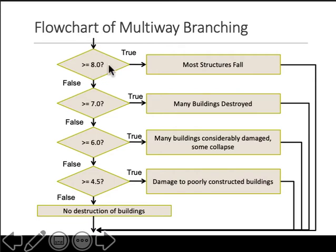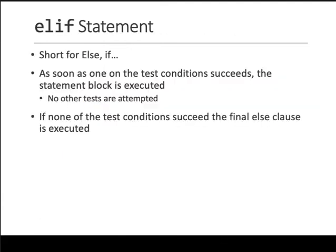Something like: if it's greater than 8 do something, if it's greater than 7 but less than 8 do something, if it's greater than or equal to 6 but less than 7 do this. So how do we write these in Python? The answer is `elif`, or else-if. It's short for 'else if'.